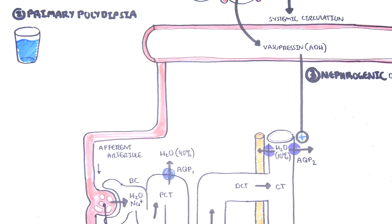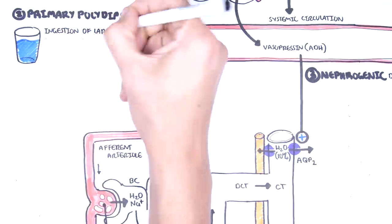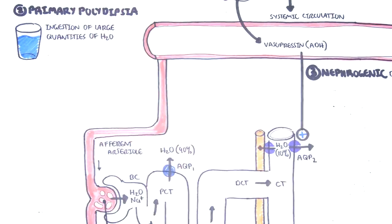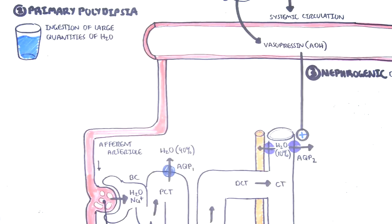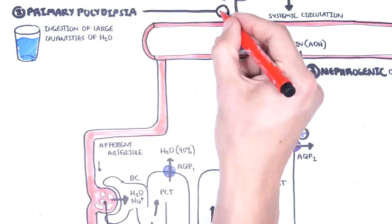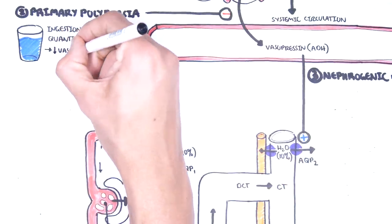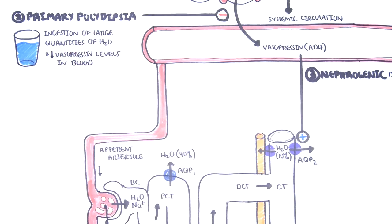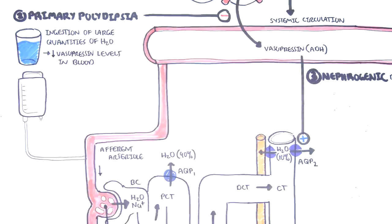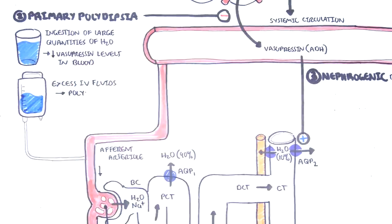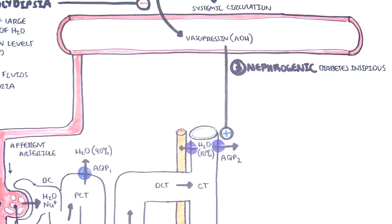Primary polydipsia is where you have ingestion of large quantities of water. When you drink a lot of water — whether due to uncontrolled thirst — the body will signal the brain not to produce antidiuretic hormone. Another cause of primary polydipsia is excessive IV fluids, which also causes polyuria. Nephrogenic diabetes insipidus involves problems in the response the kidneys have to antidiuretic hormone, whether a problem in the ADH receptor or the channels themselves.